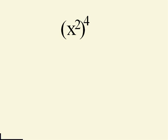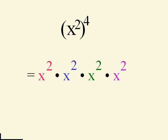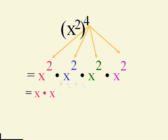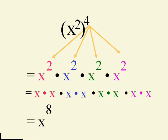Now, what we have here is not two expressions multiplied, so this is not going to use the first rule of exponents. What we have is an expression x squared raised to another power. We've raised x squared to the fourth power, so we have four of them. Recall that x squared means x times x — and with the other x squareds spread out, you can count them and get x to the eighth.